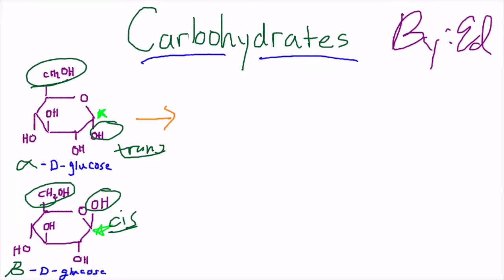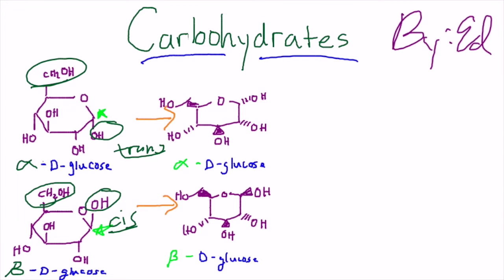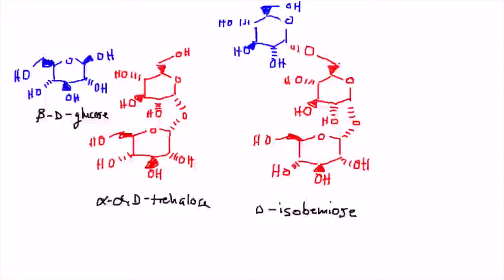Now, let me convert these Haworth projections to wedge-dash conformations, just because this is the format we're going to be using for the duration of this video. Okay, now that we have a working understanding of the terminology and the structures, we can move forward with that problem we had at the beginning of the first video, wherein we're trying to synthesize isobemios, the trisaccharide made in that fictitious bacterium. First, let's identify the glycosidic linkage in treehalos.